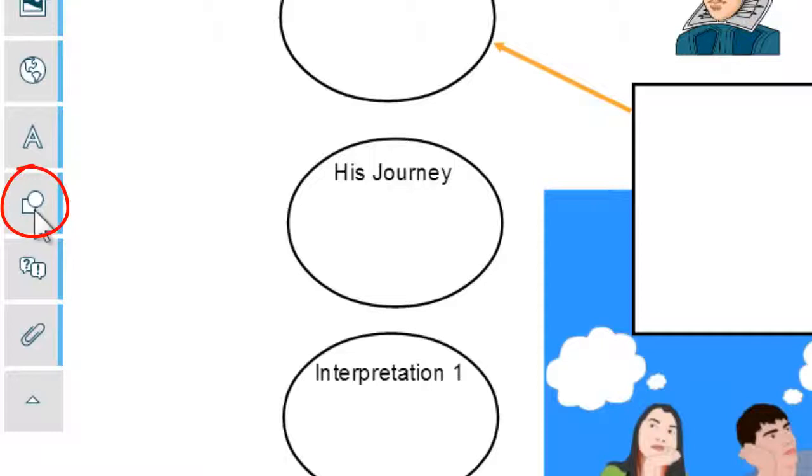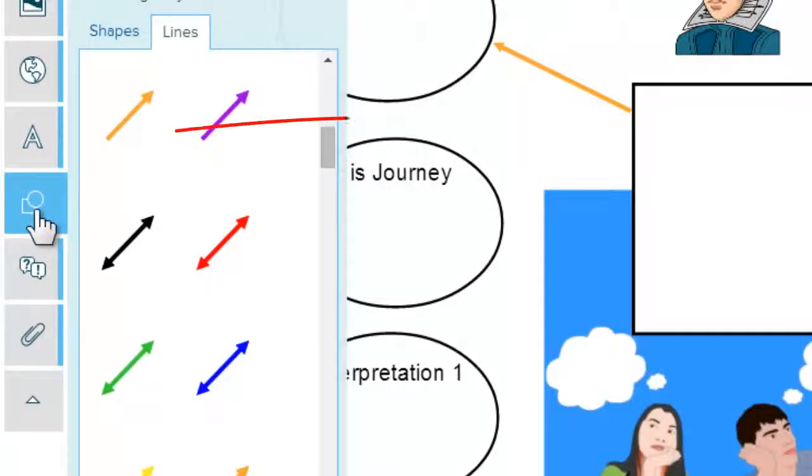Shapes and lines can be found on the side toolbar on the left hand side of your workspace. Select the line you wish to use and drag it directly onto the workspace.